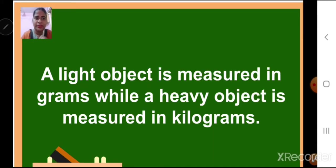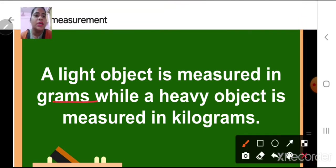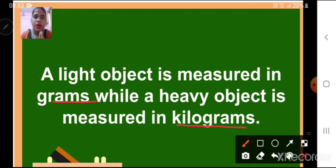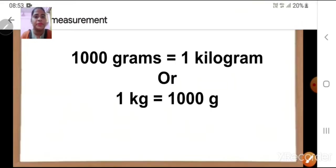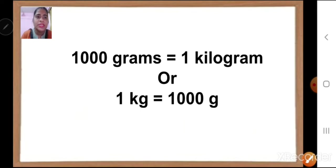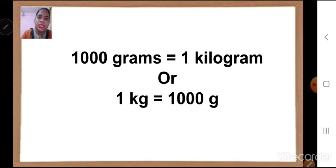A light object is measured in grams while a heavy object is measured in kilograms. Grams and kilograms are the two units of weight. Weight is measured in grams or in kilograms. 1,000 grams is equal to 1 kilogram. Or we can say 1 kg is equal to 1,000 grams.